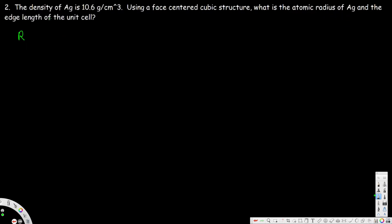When we deal with a face-centered cubic structure, you have to know that the edge length x is equal to the square root of 8 times r. If you want to know how we derived this, you can watch my previous video where I have explained everything about it.